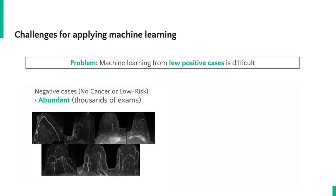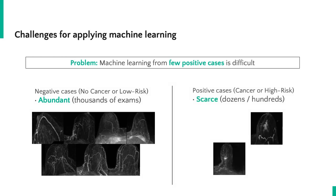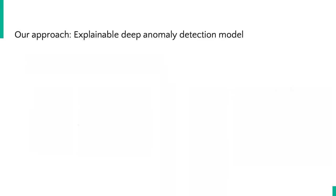Negative cases, meaning normal breast images, are much more common than positive cases where cancer is present, especially during the early stages of cancer. To train the neural network, we had access to data from over 4,000 patients totaling more than 10,000 individual MRI exams. But only a fraction of these patients, around 2%, develop cancer. The challenge this presents is that your model could simply learn to predict no cancer for every single image and be correct 98% of the time.